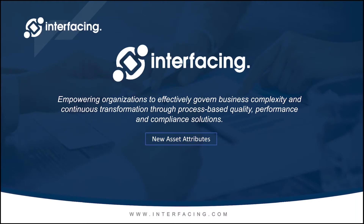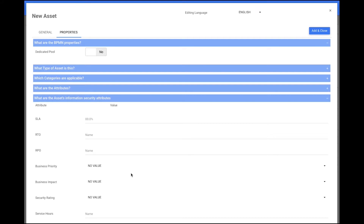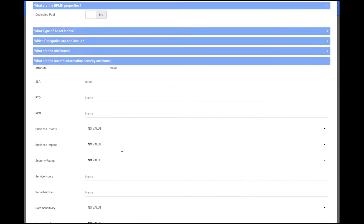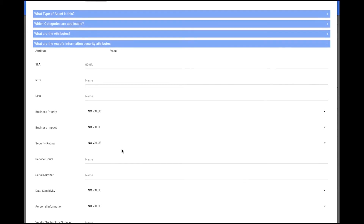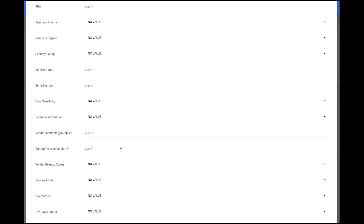New Asset Attributes. In EPC, we use the object named Asset to model hardware, software, and systems by your organization. In this new EPC release, we have included a new section to the Assets object named 'What are the Asset's Information Security attributes?' to properly identify the importance of reducing risk in regards to information security. Modelers can find this new feature when editing or creating an asset in the Properties section. These new asset attributes have been added to Audit Trails, Payload, Import and Export, Edit, and Information Security in the Details page.